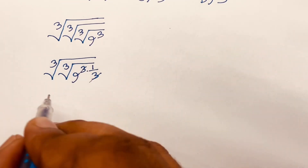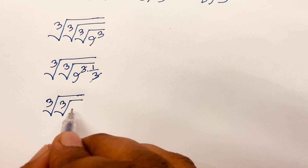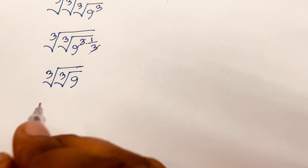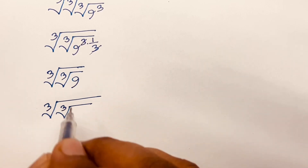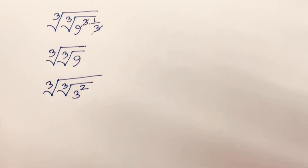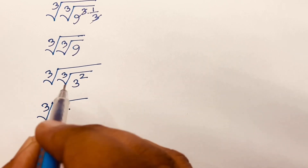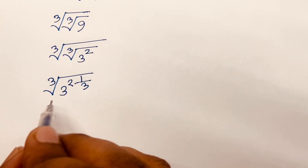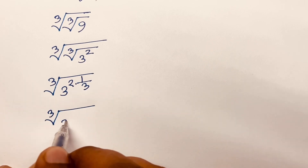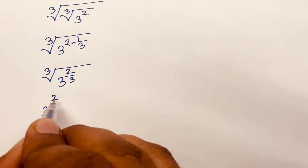Now 3 square root of 3 square root of 9 — since 9 is equal to 3 power 2, we have 3 square root of 3 power 2 times 1 over 3, which gives 3 square root of 3 power 2 over 3. That equals 3 power 2 times 1 over 3, which is 2 over 3. So we have 3 power 2 over 3.